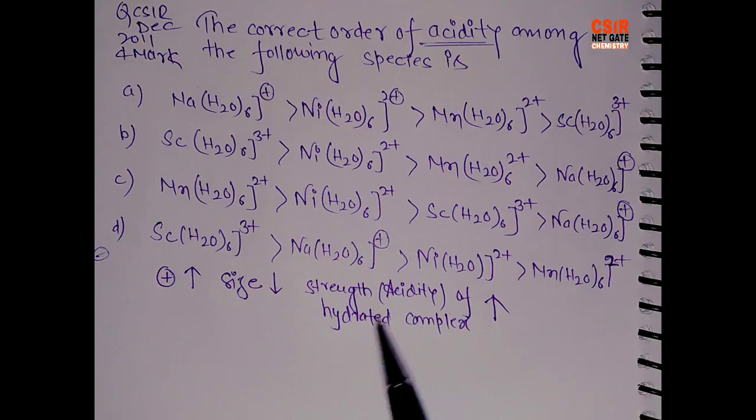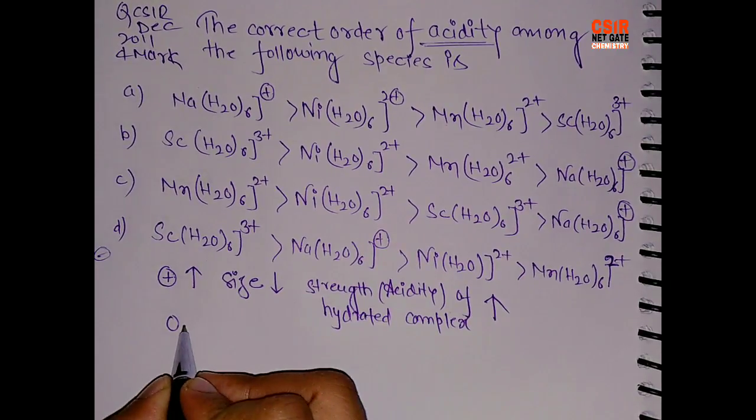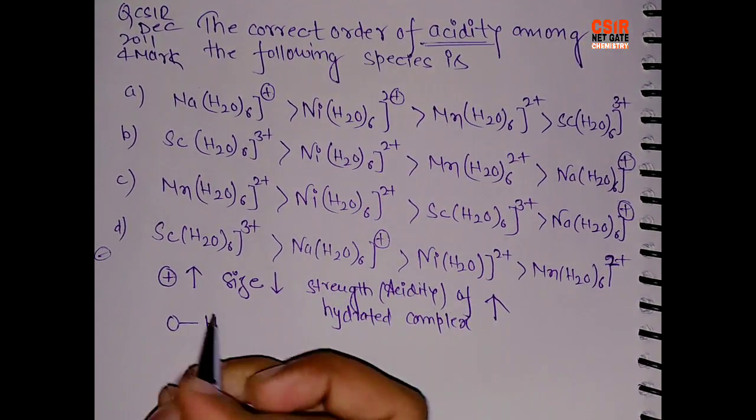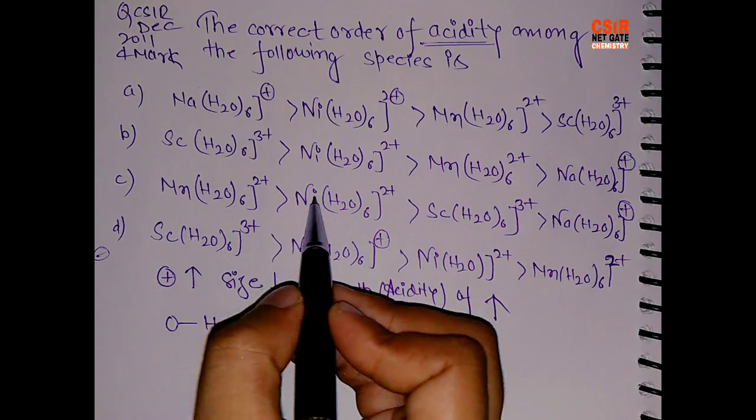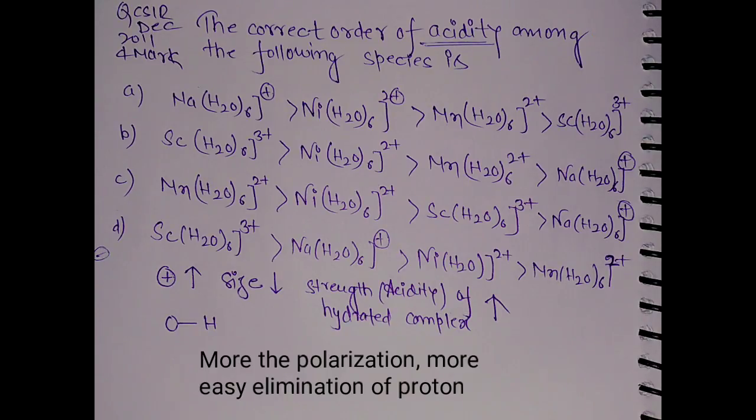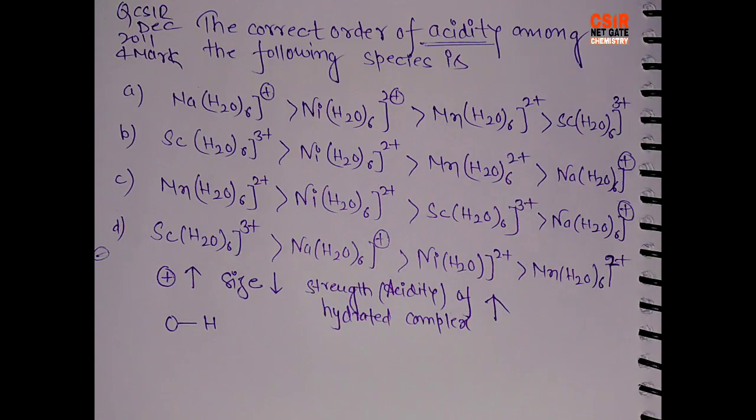And acidity of the hydrated complex will be more. Why it will be? Because in water we have OH bonds, these are water molecules. When we have higher charge in the central metal cation, then it tends to polarize this bond. We know that, the Fajans rule. So this is the basic concept we all know. But the special thing in the question is the options are very easy.